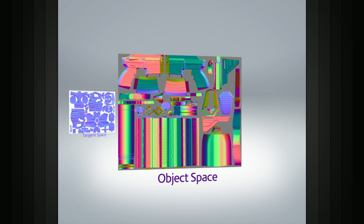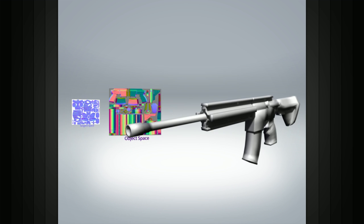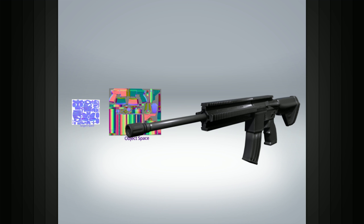Object space normal maps have more of a rainbow-like assortment of colors and have slightly improved performance compared to tangent space maps. Object space maps can be used for objects that need to move and rotate, but don't necessarily need to deform, such as a game weapon, vehicles, or buildings.